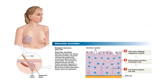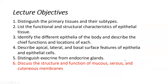The final example is holocrine secretion, seen in your sebaceous glands, where the entire cell is ruptured. There are several layers of cells, with stem cells at the bottommost layer that regenerate and reproduce new cells which migrate toward the top. When they reach the apical-most surface, they rupture off — the cell dies or bursts and releases the cytoplasm, which contains the product. In this case, that would be sebum.